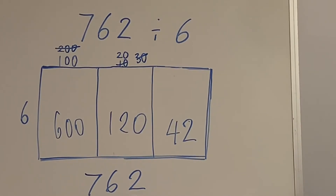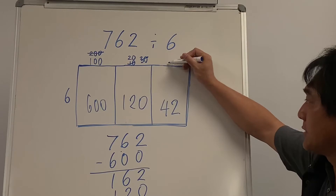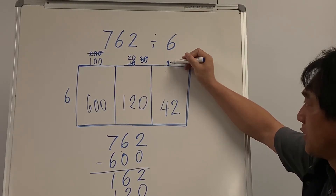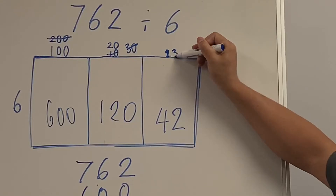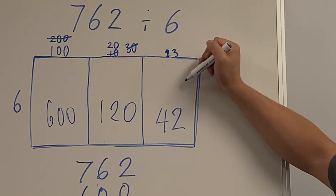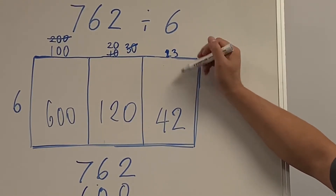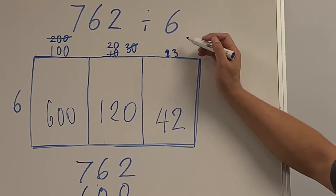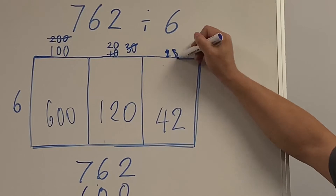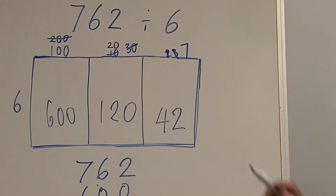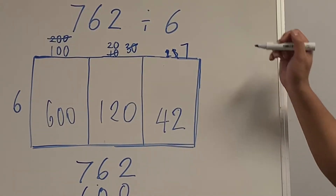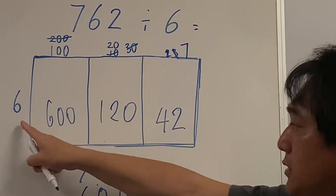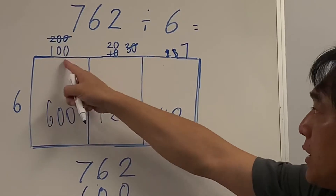1×6=6, 2×6=12, 3×6=18, 4×6=24, 5×6=30, 6×6=36, 7×6=42. So 7×6 is 42 — I've used every single cupcake. I can now see that 6 times 127 is 762, so the answer is 127.